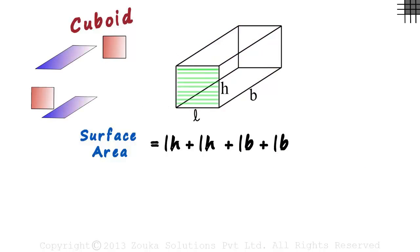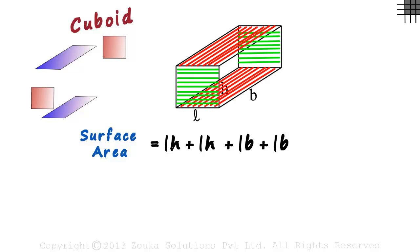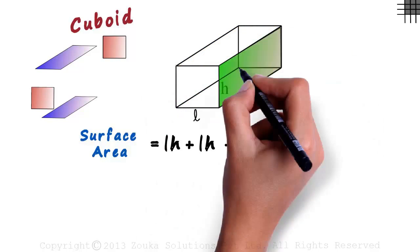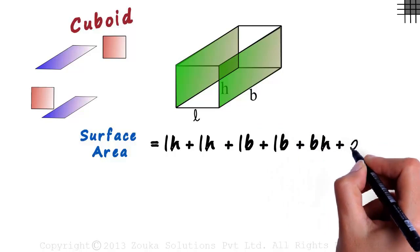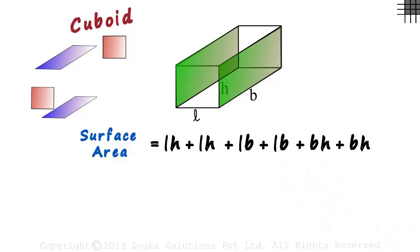We have covered front and back, top and bottom. What remains is the side faces. The sum of the areas of the rectangles at the sides will be BH plus BH. Area of each rectangle is base multiplied by height.